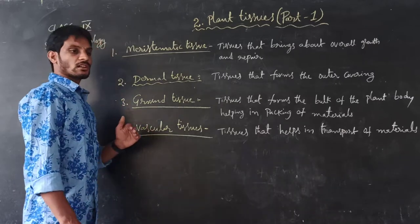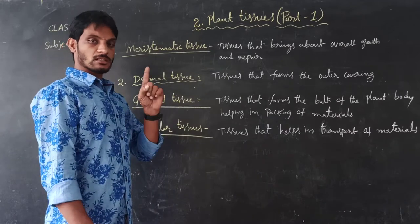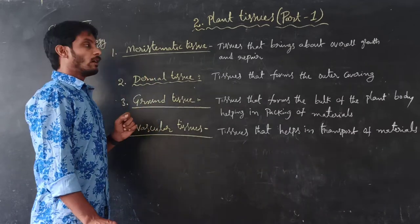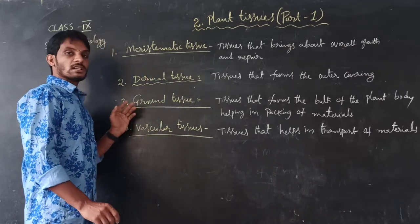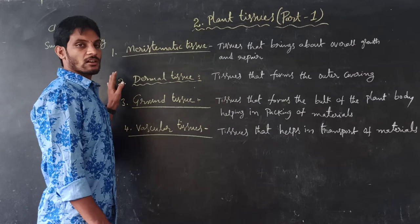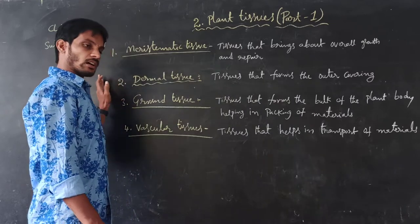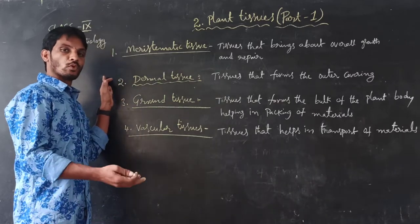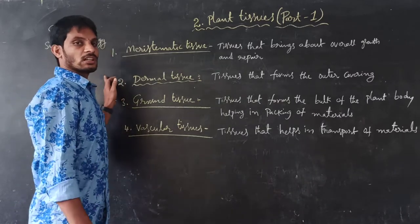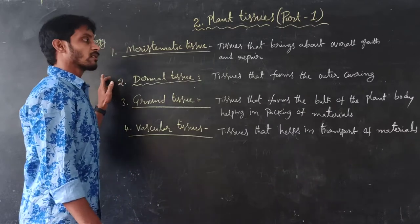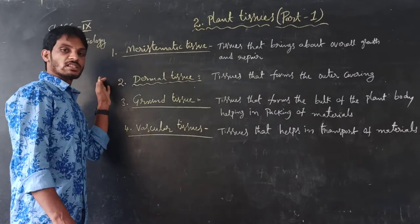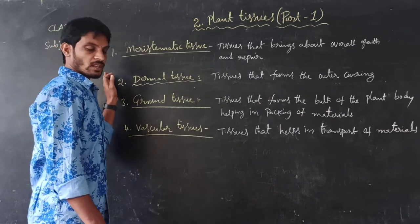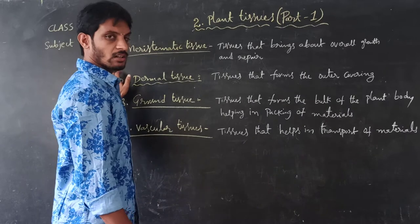Unicellular organisms means 'uni' means single or one — organisms with a single cell are called unicellular organisms. 'Multi' means more — organisms with more number of cells are called multicellular organisms.